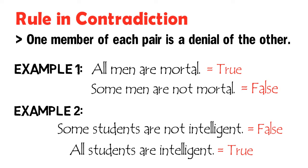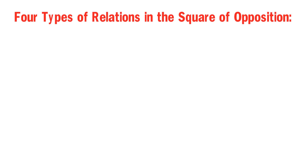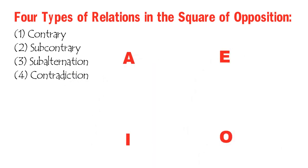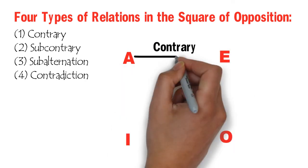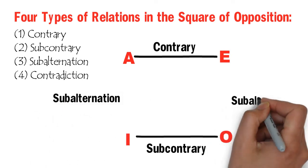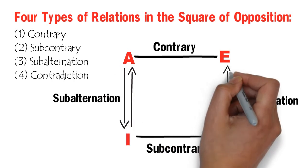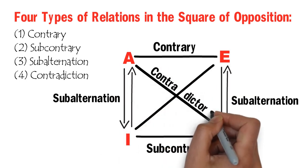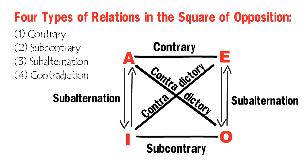To close off this series of whiteboard discussions on the types of relations in the square of opposition, here is a quick summary. The four types of relations are: Contrary, Subcontrary, Subalternation, and Contradiction. Contrary is the relationship between Universal Affirmative A and Universal Negative E propositions, while Subcontrary is the relationship between Particular Affirmative I and Particular Negative O propositions. Subalternation is the relationship between Universal and Particular propositions having the same quality, and Contradiction is the relationship between Universal and Particular propositions having different quality.